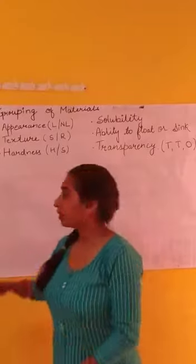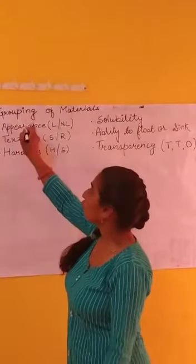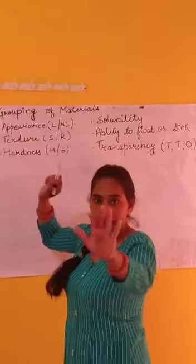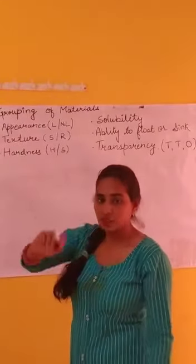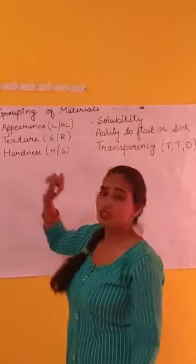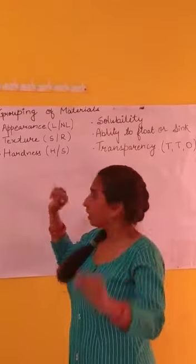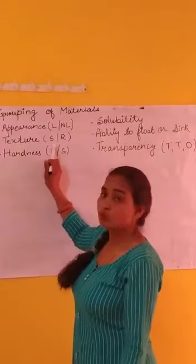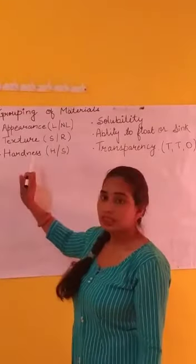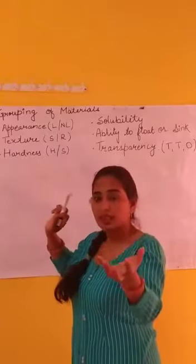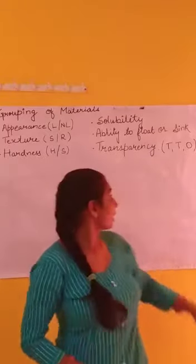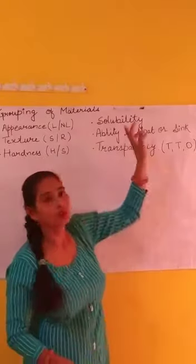So, to summarize how we group objects by their properties: first, appearance — lustrous or non-lustrous; second, texture — smooth or rough; third, hardness — hard or soft; fourth, solubility — soluble or insoluble; fifth, ability to float or sink; sixth, transparency.